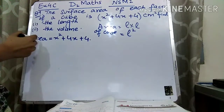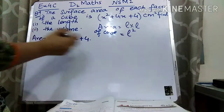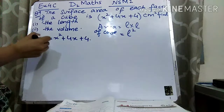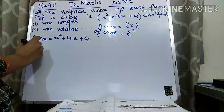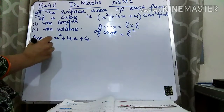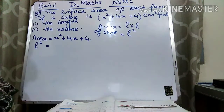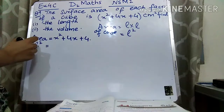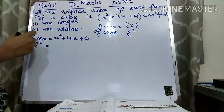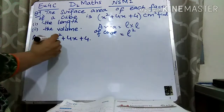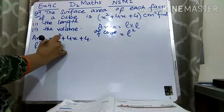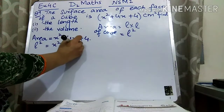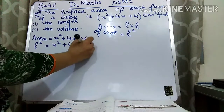So the area is equal to L square. In place of area, we can write down L square because we have to find out the length. So L square is equal to x² + 4x + 4.